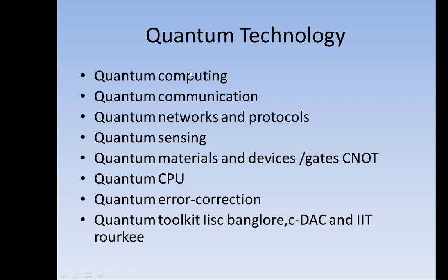In quantum technology we have different sections. You can see how quantum is used in computing, in communications, in networks and protocols, then quantum sensing, quantum materials and devices, gates like CNOT, quantum CPUs, quantum error corrections, and a quantum toolkit has come from ISC Bangalore, CDAC and IIT Roorkee.